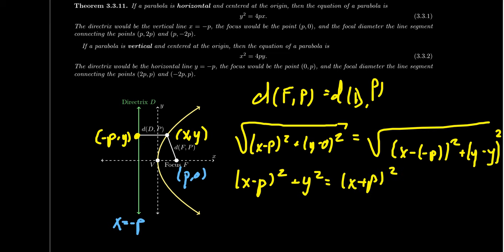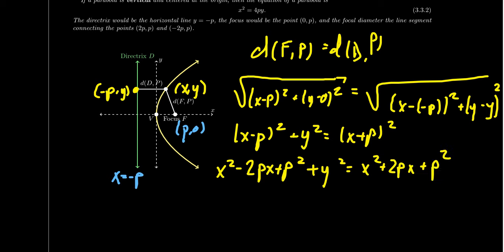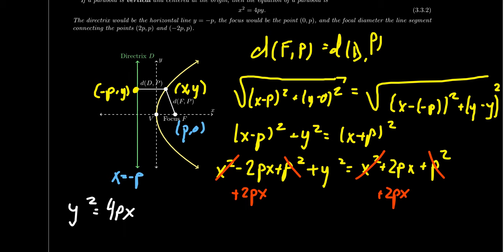Expanding both sides: x² − 2Px + P² + y² = x² + 2Px + P². Combining like terms, the x² terms cancel and the P² terms cancel. Adding 2Px to both sides, we get y² = 4Px, thus giving us the formula we had above.